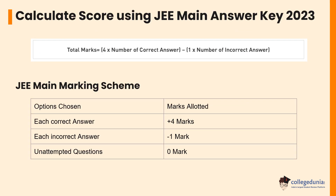Once the payment is successful, all the challenges raised are submitted. Candidates must now wait for NTA's decision on the challenges raised. Once candidates have viewed the JEE Main 2023 answer key and response sheet, they can tally their answers to calculate their score. Candidates are awarded four marks for every correct answer, and one mark is deducted for every wrong answer. If a candidate did not attempt a question, it is not evaluated and zero marks are awarded for that question.